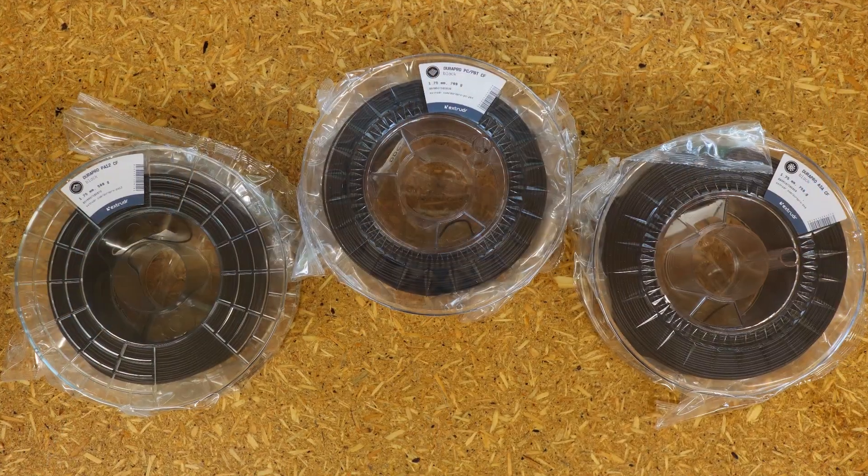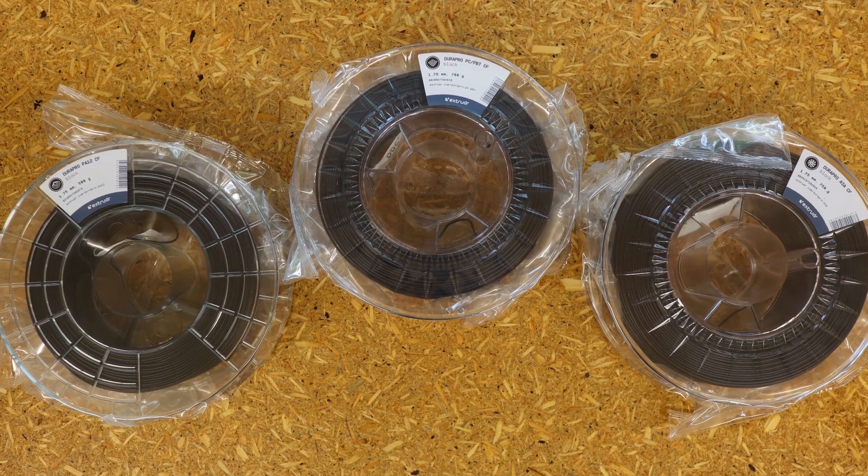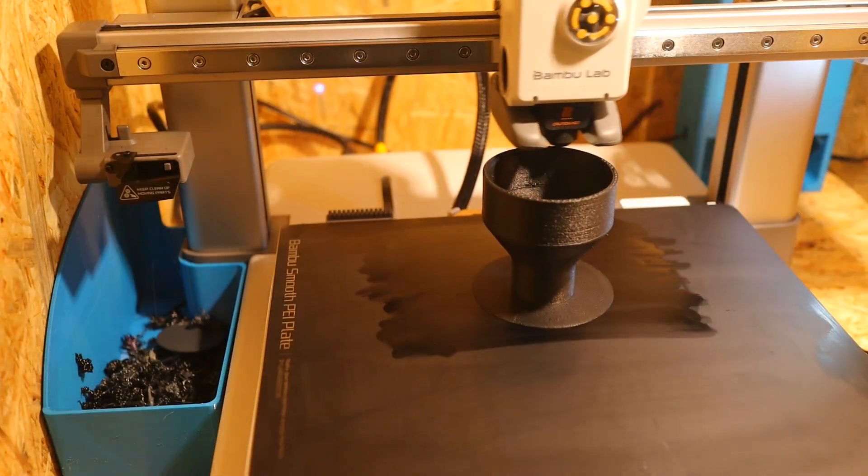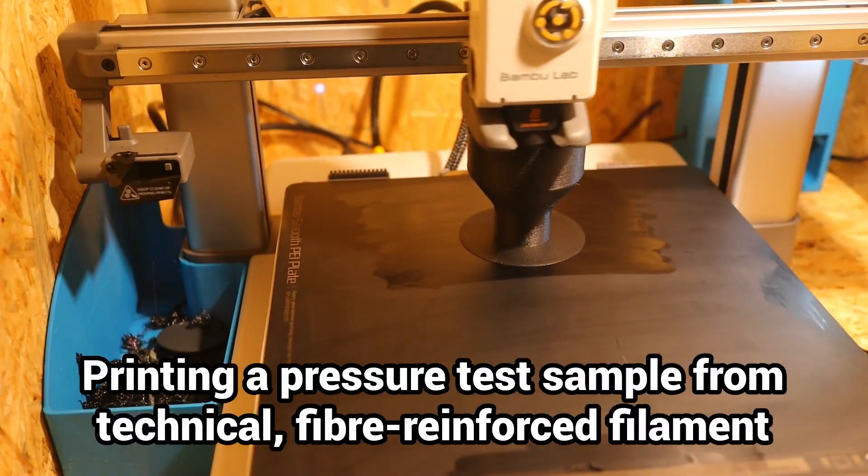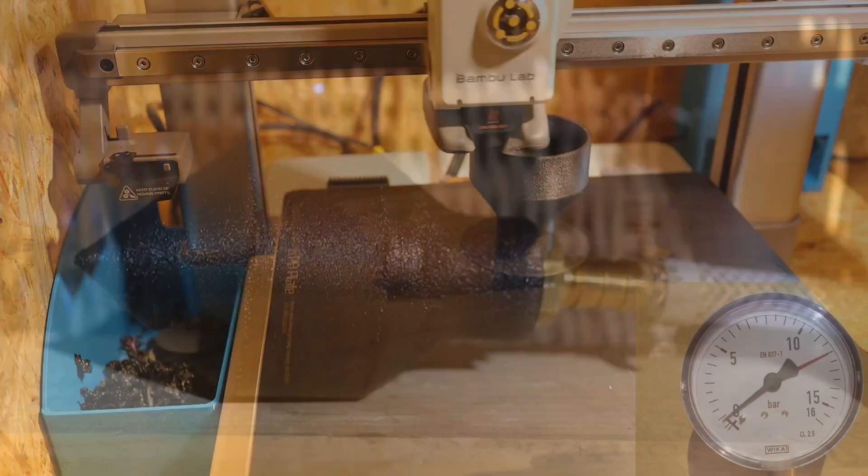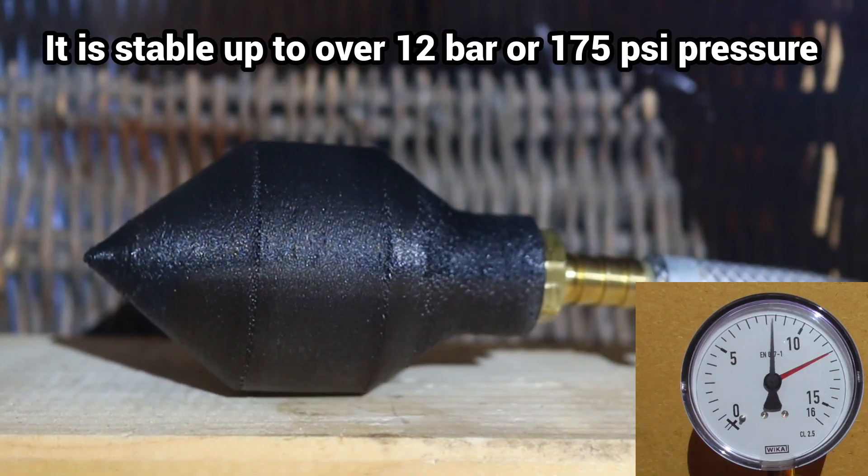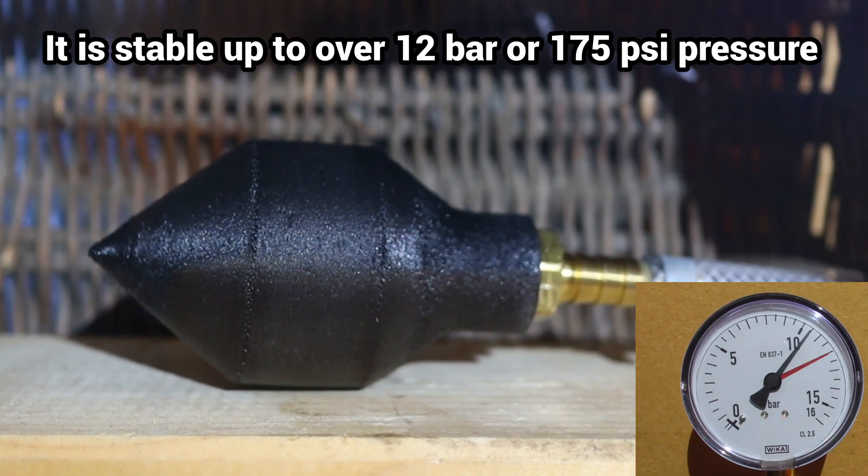The strength of modern, often fiber-reinforced printing materials is truly impressive. I have optimized my workflow with various materials so that I can quickly and reliably produce functional components with relatively thin wall thicknesses and a compressive strength of up to 12 bar or 175 PSI.